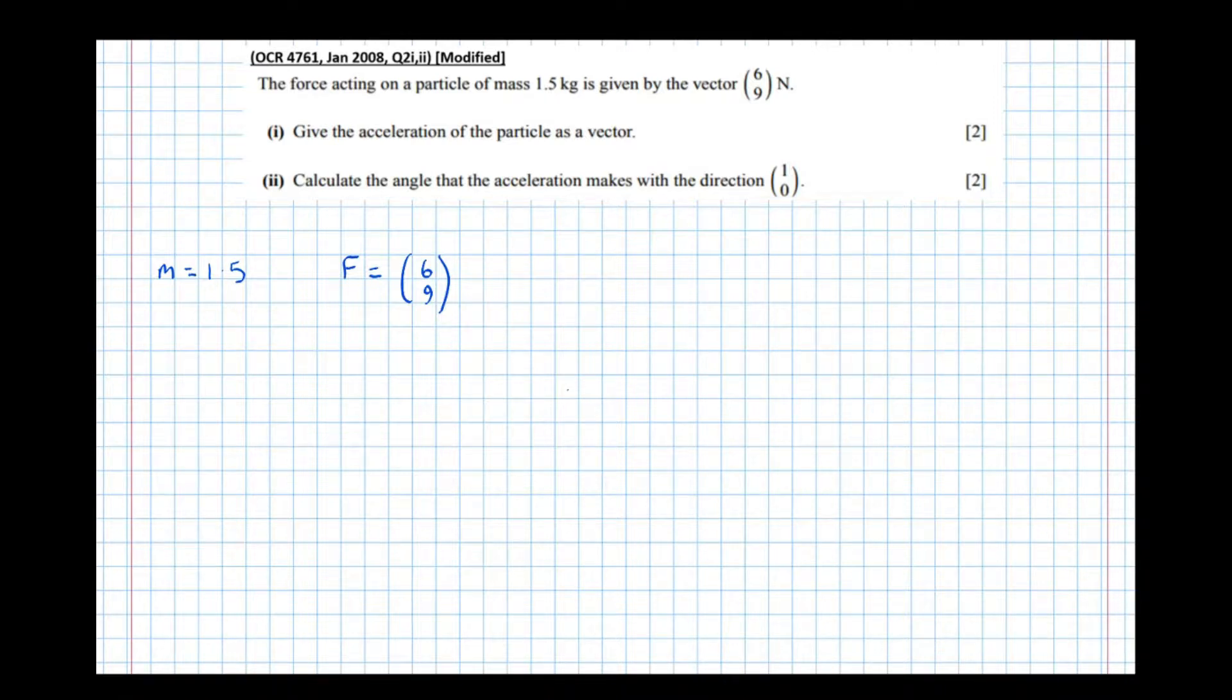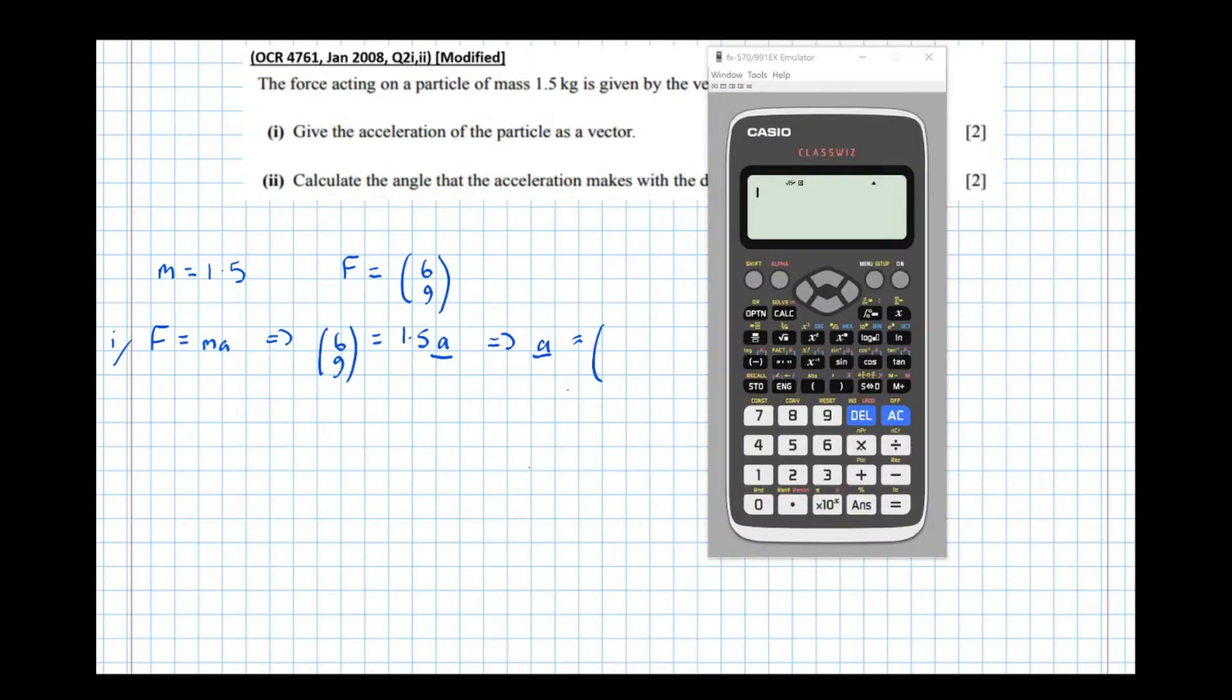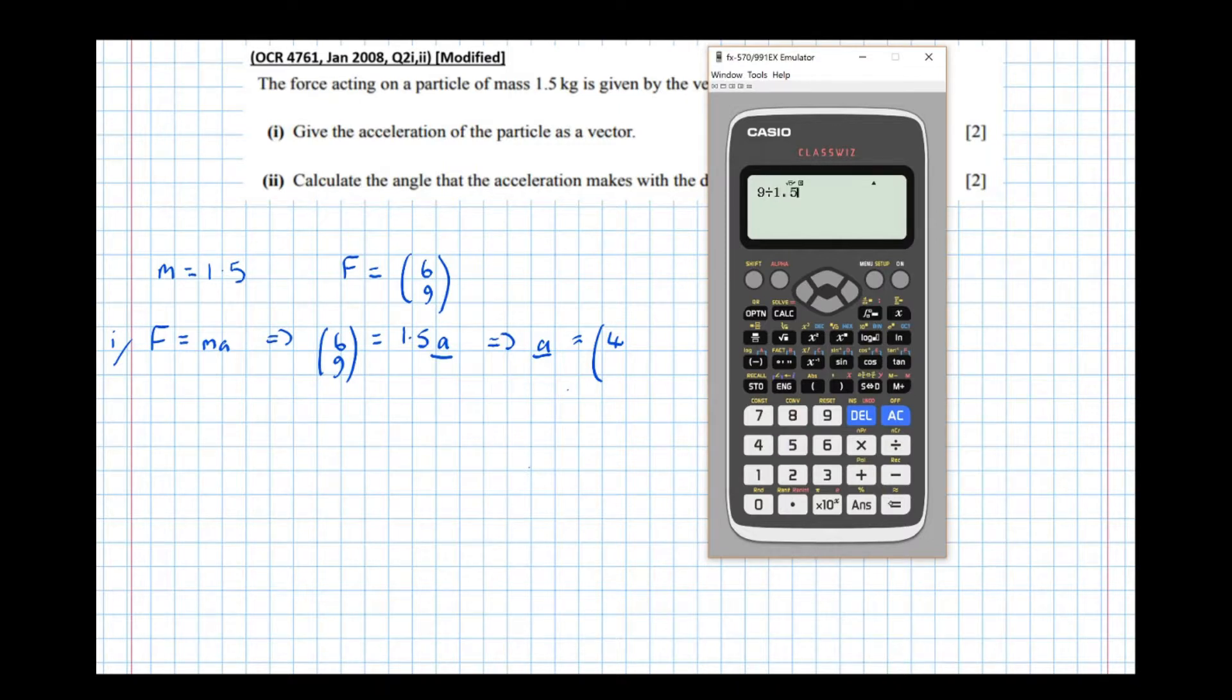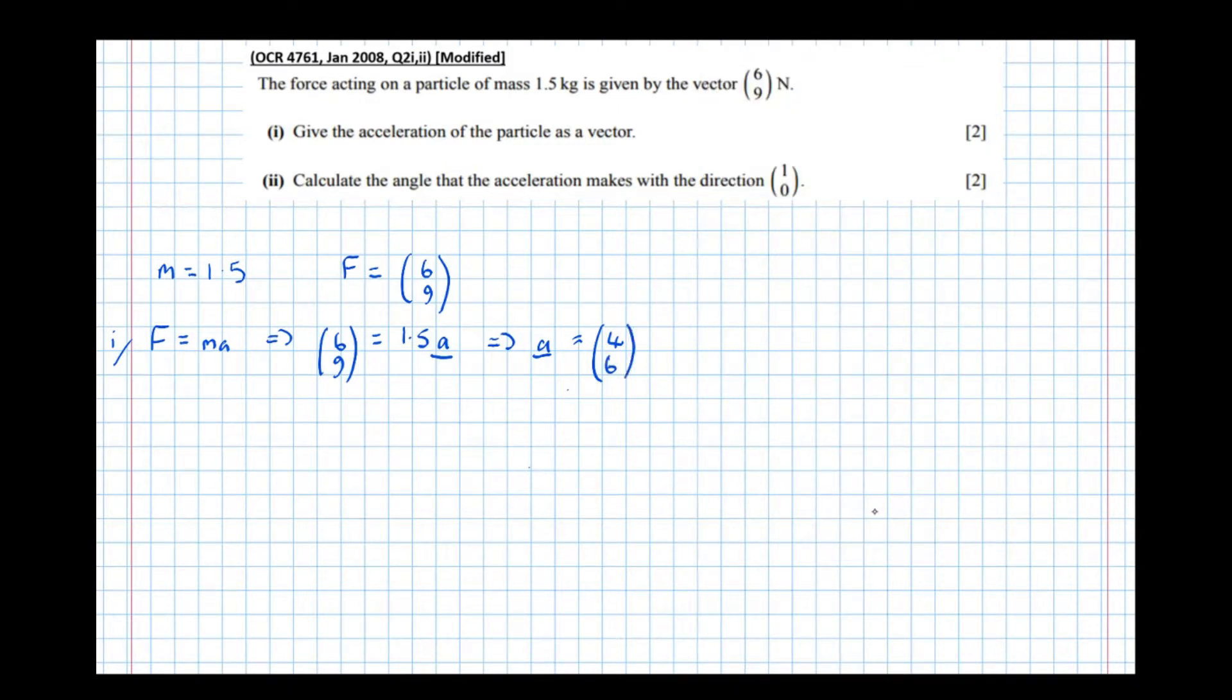Give the acceleration of the particle as a vector. So part one, we use the equation Newton's second law, F equals MA, which means that the vector (6, 9), the force, equals mass 1.5 multiplied by acceleration, which is the vector A. So if we divide both sides by 1.5, that means the acceleration vector A equals, so 6 divided by 1.5 is 4, and 9 divided by 1.5 is 6. So the acceleration is (4, 6).